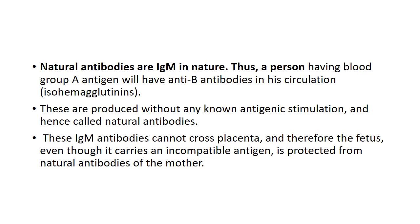Natural antibodies are IgM in nature. Thus a person having blood group A will have anti-B antibodies circulating. These are produced without any antigenic stimulation. IgM antibodies cannot cross the placenta, and therefore the fetus, even though it carries incompatible antigens, is protected from these antibodies.